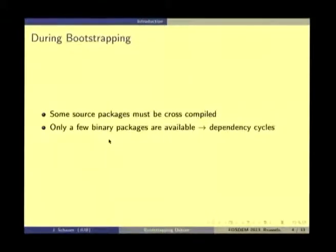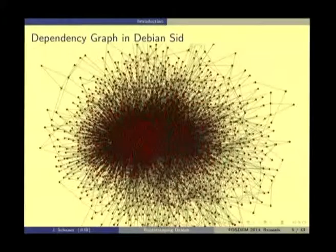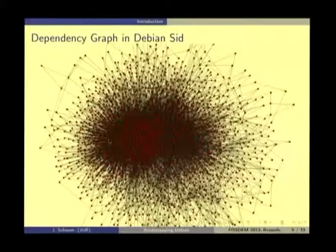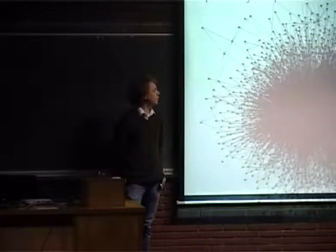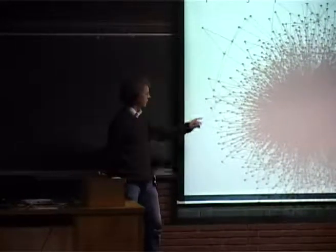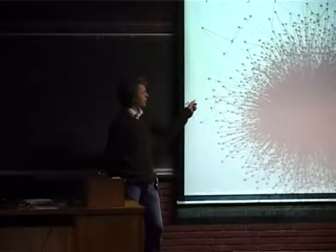Because source packages depend on the maximum possible amount of binary packages, and those binary packages might build from source packages that cannot be built because other source packages must be built first, dependency cycles are created. To get an overview of the problem size, this is the current status of Debian SID as of January 1st, 2013 — a strongly connected component where every node is involved in a cycle with every other node.